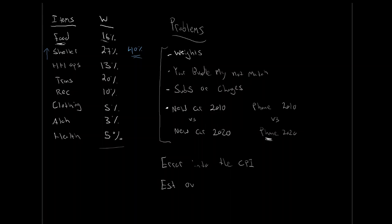Despite all these attempts, error is introduced into the CPI. It's estimated that CPI overestimates inflation by about half a percentage point. So if CPI shows 3% inflation, true inflation might only be 2.5% — or it might actually be 3%. That's the problem with error: you don't know when it applies. The general belief is that CPI overestimates inflation, but we can't be 100% certain.